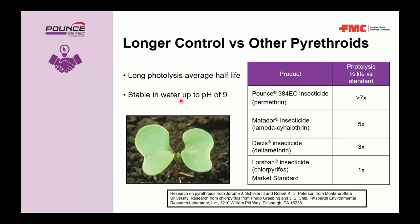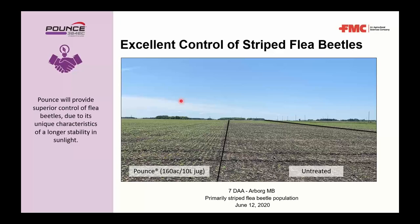A side-by-side trial in Arbor, Manitoba last year — primarily a striped flea beetle population — showed excellent control. Seven days after application, Pounce at the recommended 160-acres-per-10-liter-jug rate was compared to untreated. With high flea beetle pressure, the untreated side was ravaged, while the Pounce-treated side held back the flea beetle attack on emerging canola leaves.